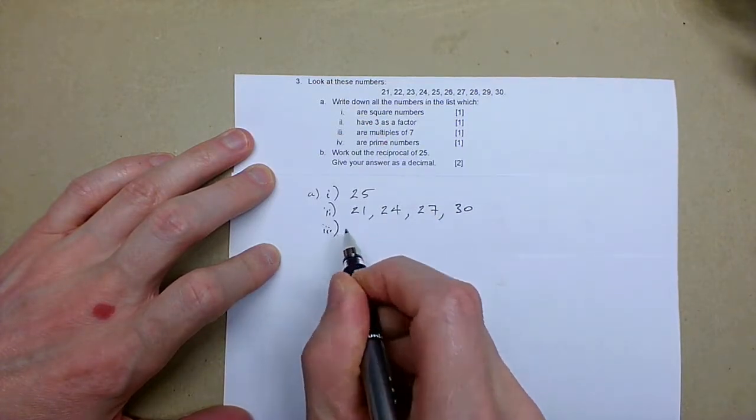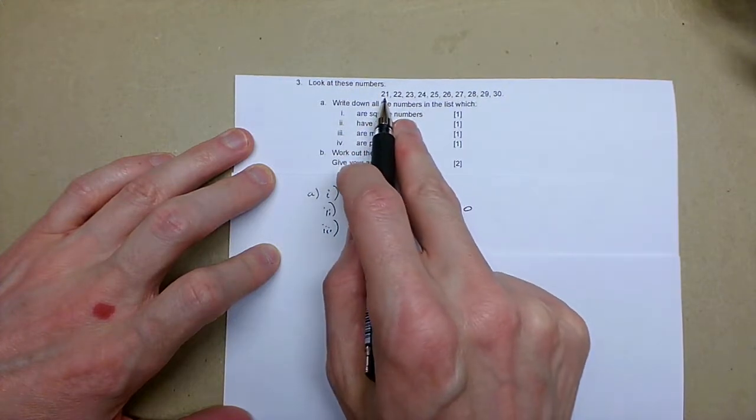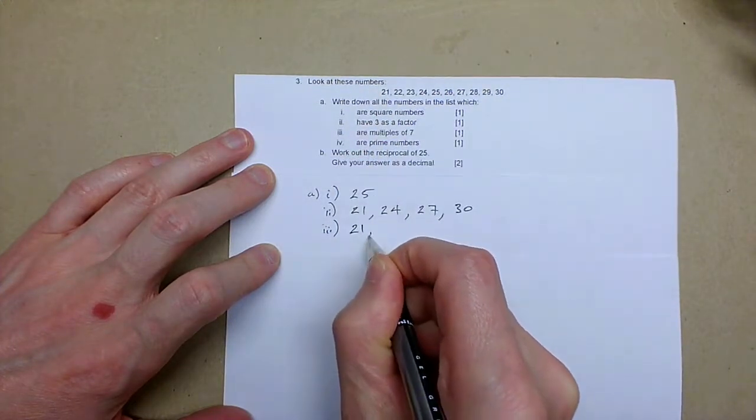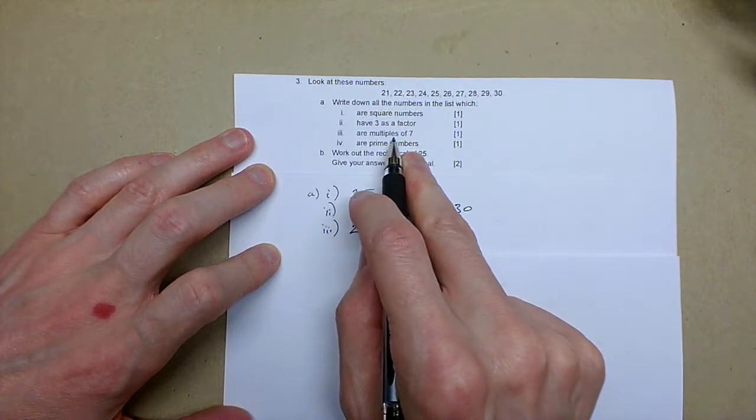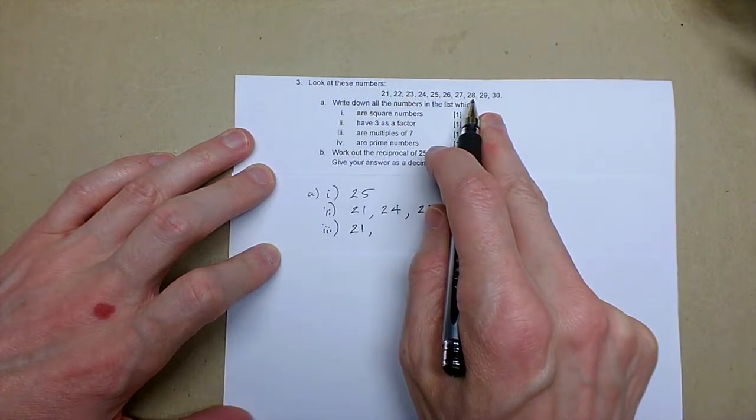Part three are multiples of seven. Seven times tables, well, we had three sevens of 21. 21 and 28, four sevens.